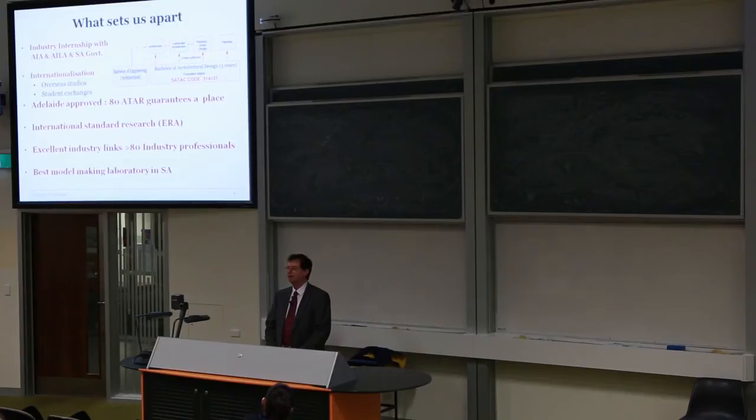ERA, Excellence in Research Australia. It is a government body that actually measures the level of research that each discipline undertakes within each of the universities in Australia. Now we, my discipline area, Architecture and Built Environment, we have actually been measured as being world standard. What does that mean to you? That means to you that we are international level researchers. That research knowledge that we glean gets fed back into you as our students. So it means you are always up to date because we are always up to date and current. We are the only university in this state that actually has that standard in architecture.